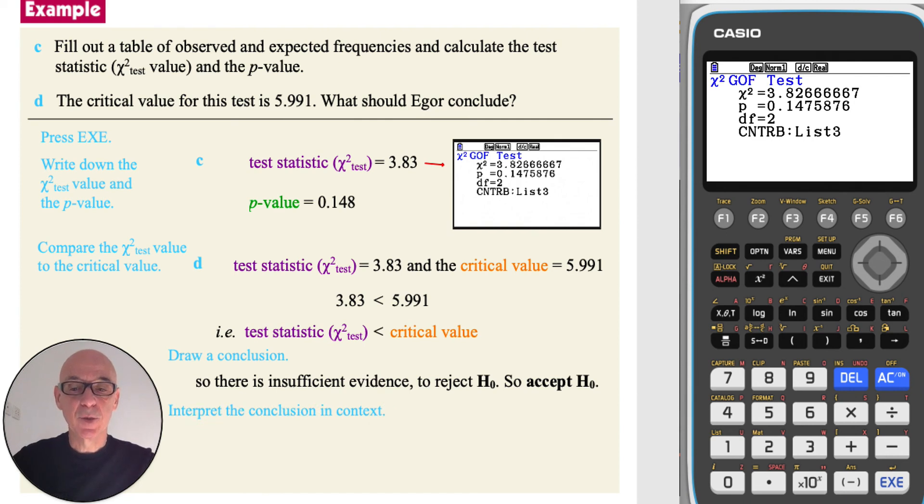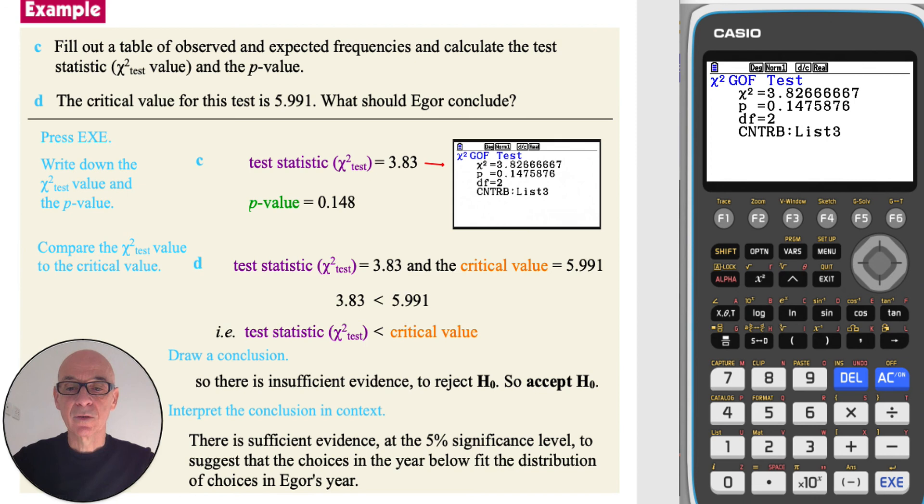And finally, interpreting the conclusion in the context of the question, we state that there is sufficient evidence at the 5% significance level to suggest that the choices in the year below fit the distribution of the choices in Igor's year. Perfect, goodbye!